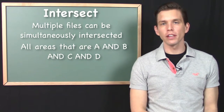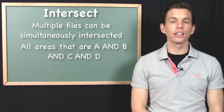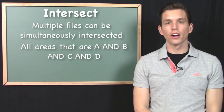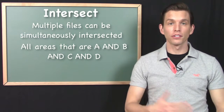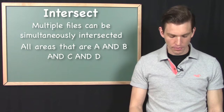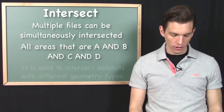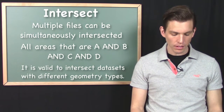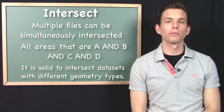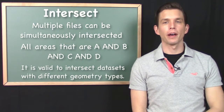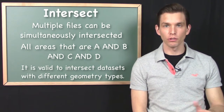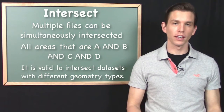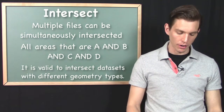When most people think about the intersect operation, it's pretty natural to think in terms of intersecting areas. We can think of lots of examples where we would like to intersect areas — we need all areas that are A, B, C, and D. However, it is acceptable to intersect things with different geometry types. I don't have enough time to get into all the different possible combinations; that can be explored in a more dedicated study in a later video.